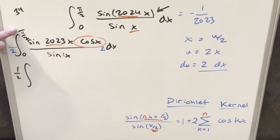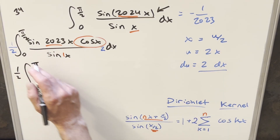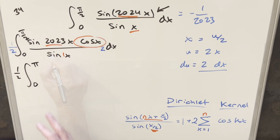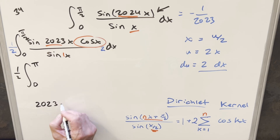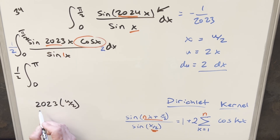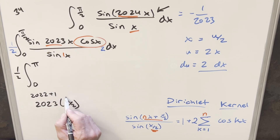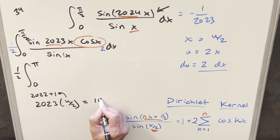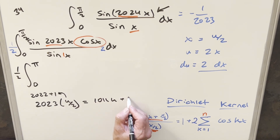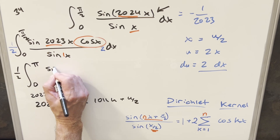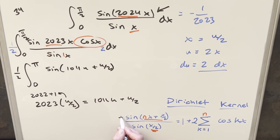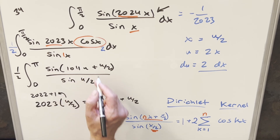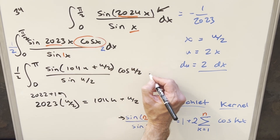We have our 1/2 out front. Updating our bounds: plugging in π/2 gives 2·(π/2) = π for the upper bound, and zero stays zero. For sin(2023x), plugging in x = u/2 gives sin(2023u/2). I can write 2023 as 2022 + 1, so 2023·(u/2) = 1011u + u/2. So this becomes sin(1011u + u/2). The denominator becomes sin(u/2) and we also have a cosine(u/2) du factor.